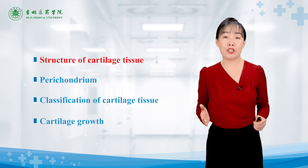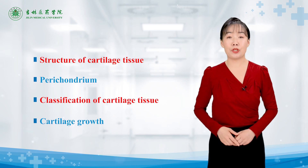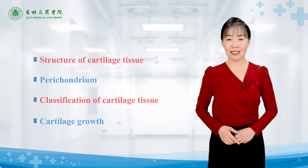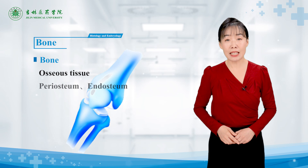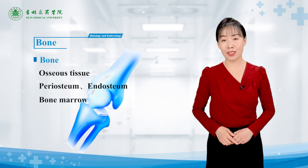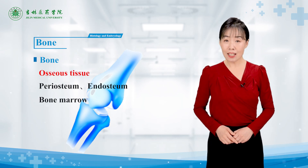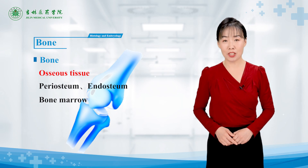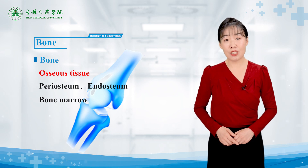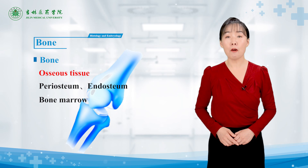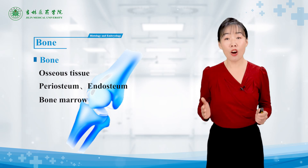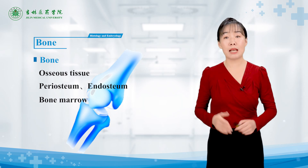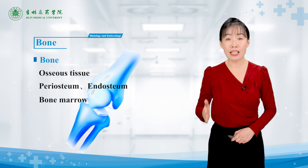The structure of cartilage tissue and the classification of cartilage tissue are key areas of emphasis. Bone is composed of osseous tissue, periosteum, endosteum, and bone marrow. Osseous tissue is a kind of connective tissue specialized for support and protection, consisting of cells, fibers, and a formless ground substance. Due to the presence of inorganic salts in the ground substance, bone tissue is hard and rigid.